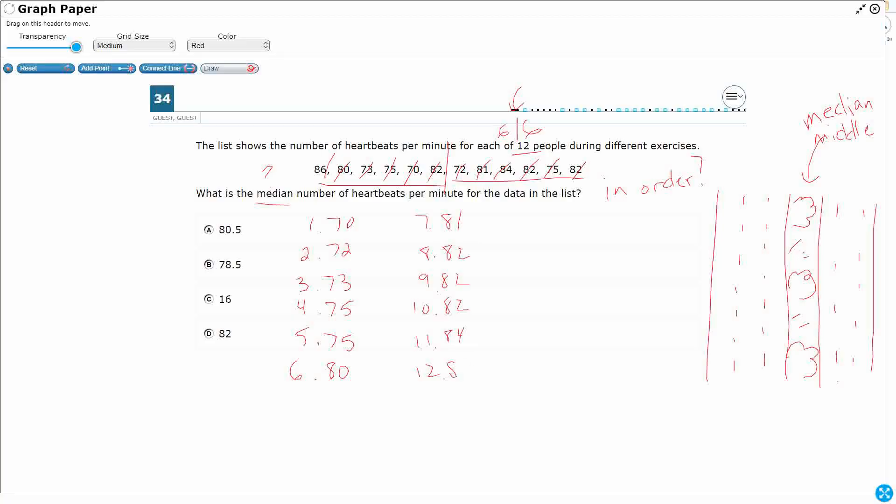So there's many different things I can find from this. If I wanted to find the mode, this would be it. That's the most chosen number. If I wanted to find the range, it's going to be my first number, 70, subtracted from my last number, 86. So that's 16. But I don't want either of those.